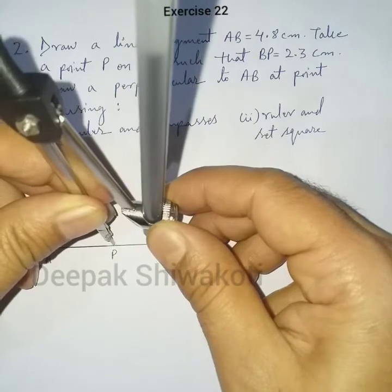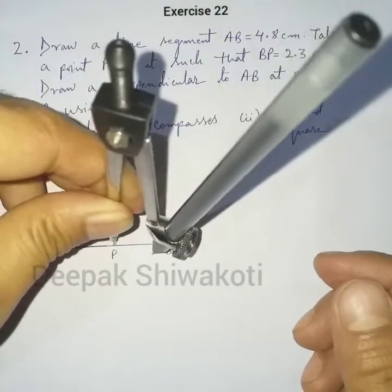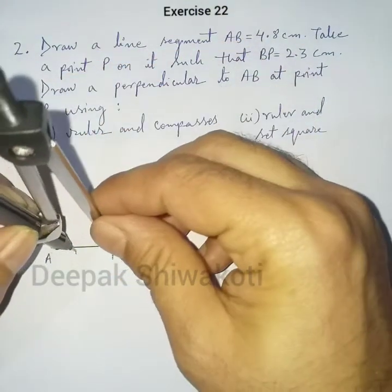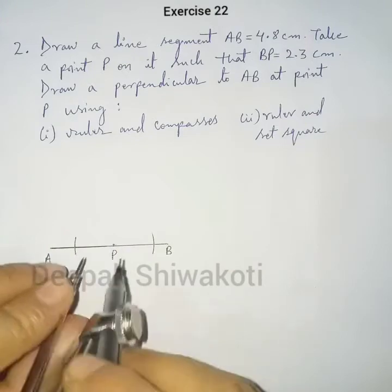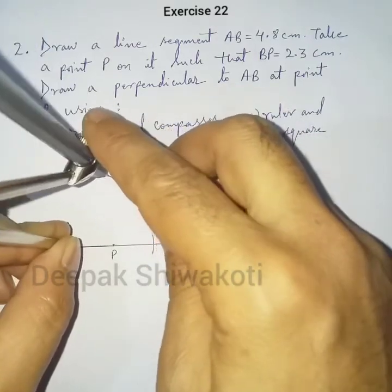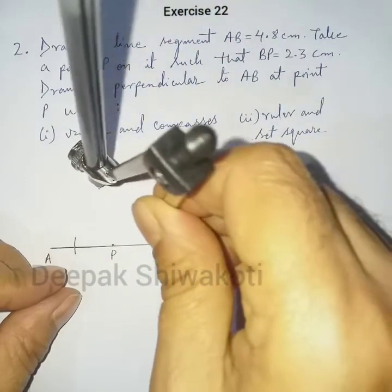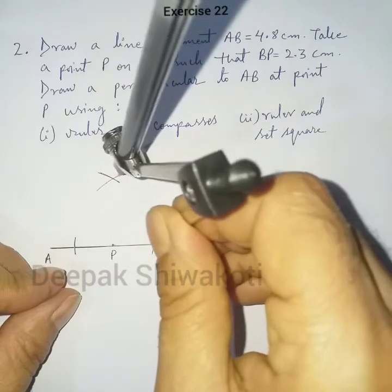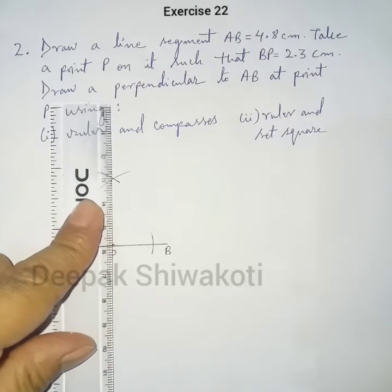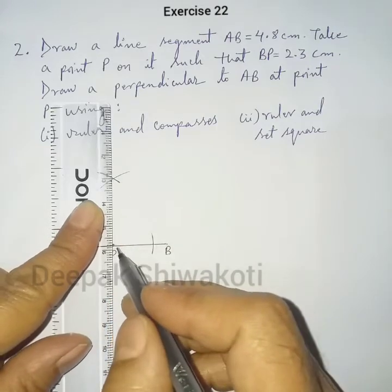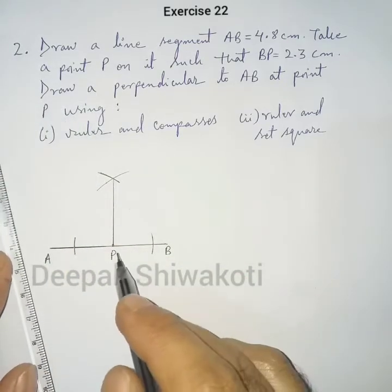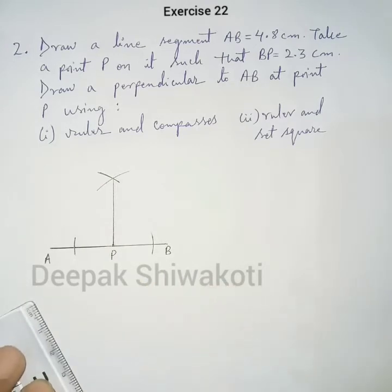Taking the compass, make an arc with some radius to cut line AB on both sides of P. Then increase the radius and make an arc above, and with the same radius make another arc to intersect the first arc. Using the ruler, join this intersection to point P — here is the perpendicular at point P.